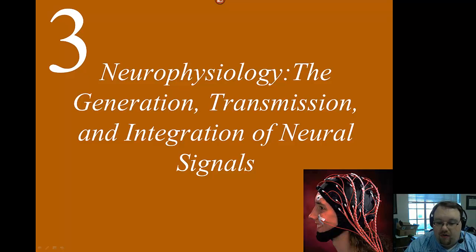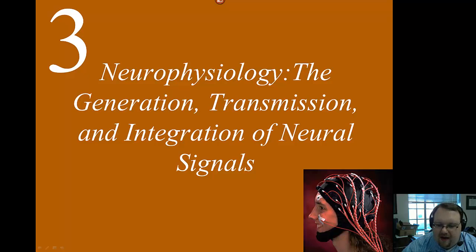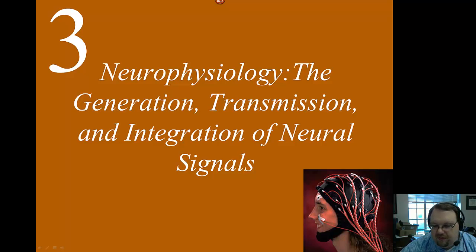Welcome back everyone. We're on chapter 3 now. In chapter 2 we talked about neurons and the structures of the brain — some gross anatomy. This time we're taking a step back and looking on a smaller scale at what actually happens within a neuron. We're going to look at how neurons fire and start learning about neurotransmitters, which we'll be building upon throughout this semester.